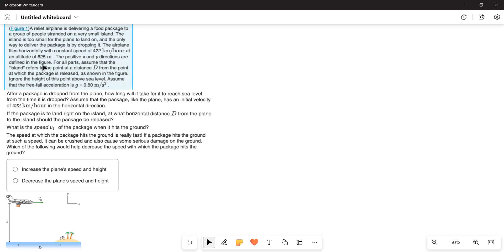The airplane flies horizontally with constant speed of 422 km per hour at an altitude of 625 meters. The positive x and y directions are defined in the figure. For all parts,